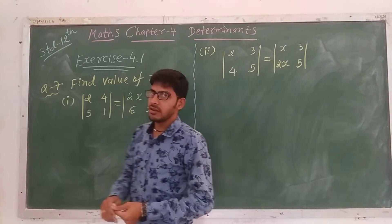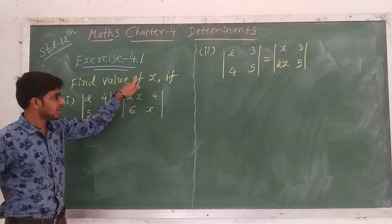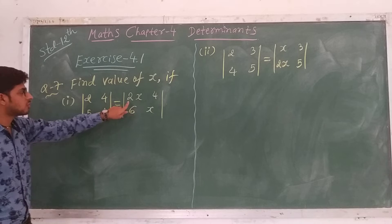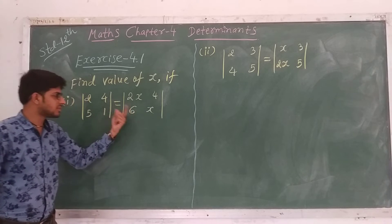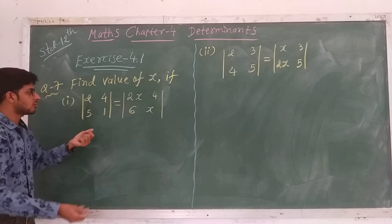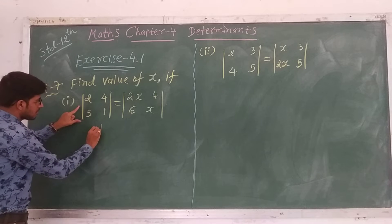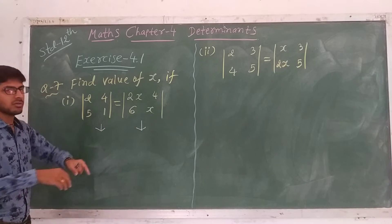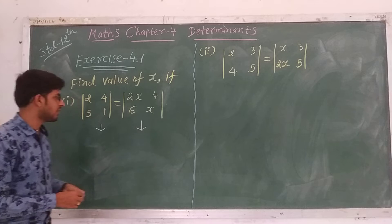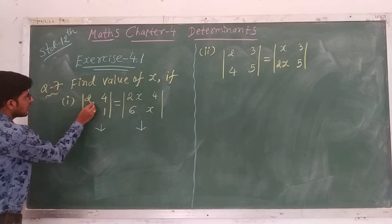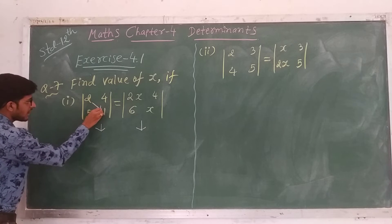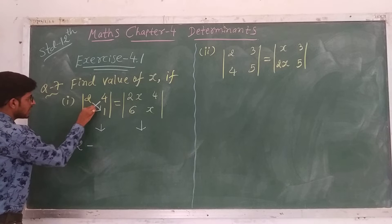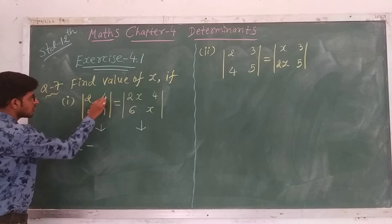Next, question number 7: find the value of x if the determinant [2, 4; 5, 1] equals the determinant [2x, 4; 6, x]. Here both sides are 2×2 determinants, so we simply solve each 2×2 determinant individually — left-hand side and right-hand side — then compare and find the value of x.